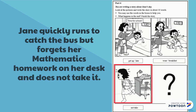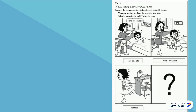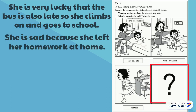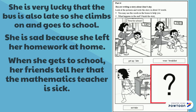Now, in Picture 4, you have to choose what happens. So, if I decide for myself, I think I will write: she is very lucky that the bus is also late, so she climbs on and goes to school. Now, what happens next when she gets to school? She is sad because she left her homework at home. So, what will happen next? When she gets to school, her friends tell her that the mathematics teacher is sick. Hooray! No homework.